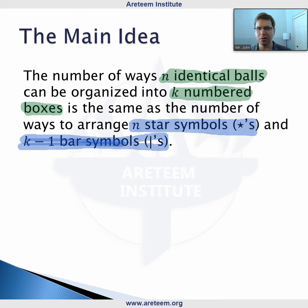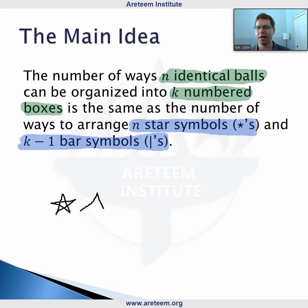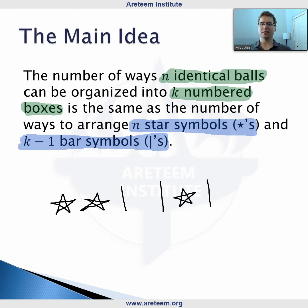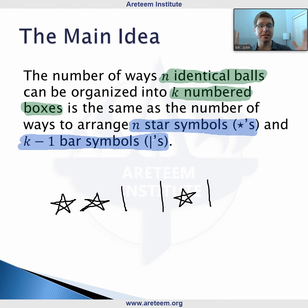Let's look at an example of this. So what if we have two stars, a bar, a bar, maybe another star, then another bar? That is now some arrangement of stars and bars just as symbols.